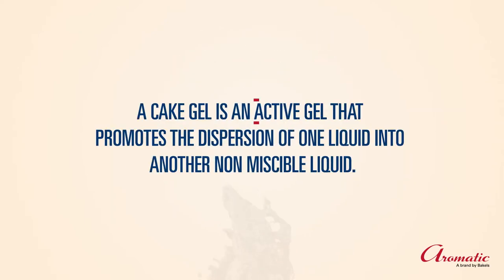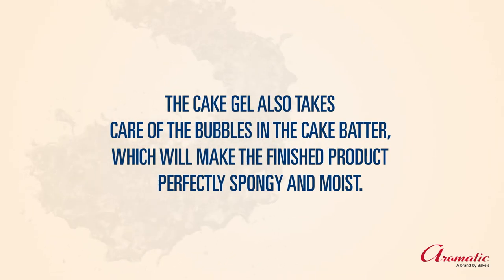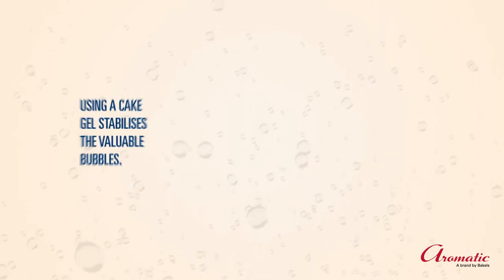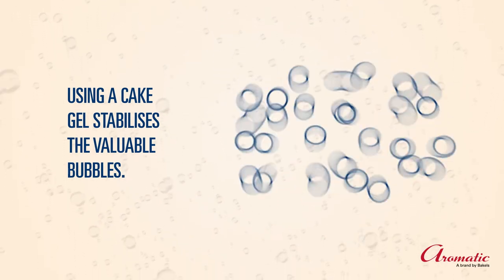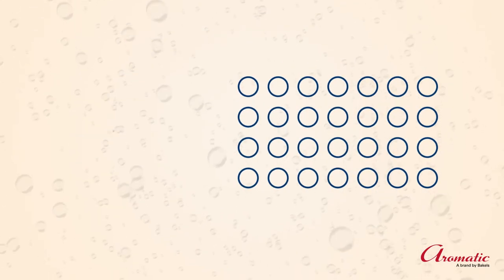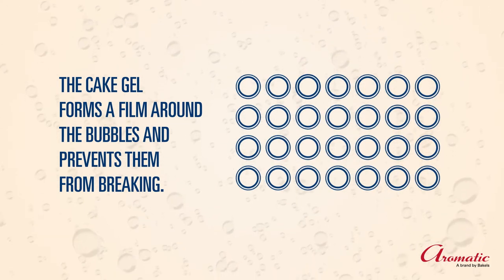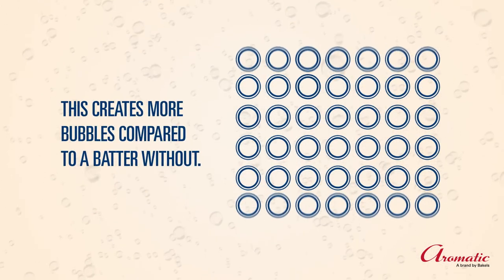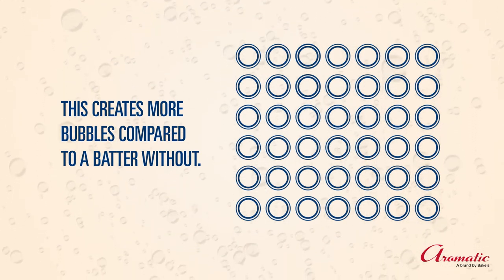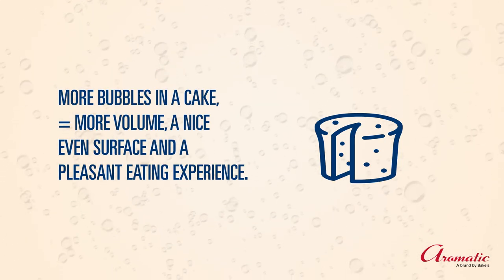A cake gel is an active gel that promotes the dispersion of one liquid into another non-miscible liquid. The cake gel also takes care of the bubbles in the cake batter, making the finished product perfectly spongy and moist. Using a cake gel stabilizes the valuable bubbles — the gel forms a film around them and prevents them from breaking, creating more bubbles compared to a batter without. More bubbles in a cake equals more volume.